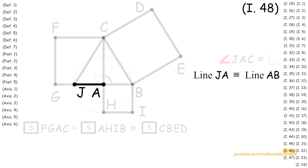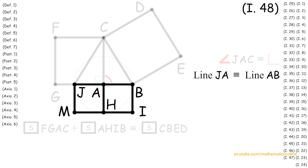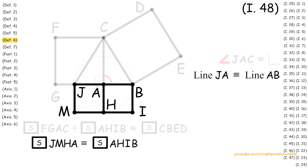Now from Proposition 46, we prove that with any line, we can always construct a square. Therefore, on line JA, we construct a square. Now notice that squares AHIB and JMHA have a side in common, and by definition of a square all sides are congruent. Therefore, both squares must be congruent.